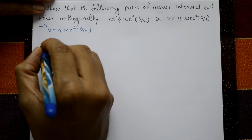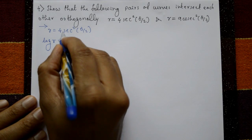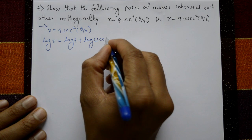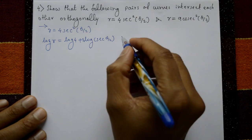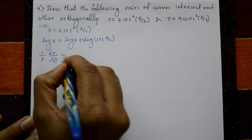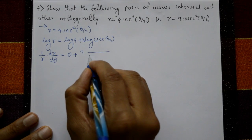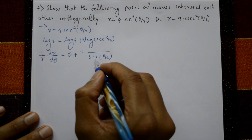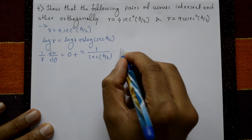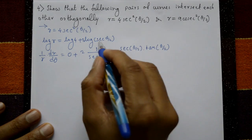Taking log on both sides: log(r) = log(4) + 2·log(sec(θ/2)), using log property. Now differentiate with respect to θ: (1/r)·(dr/dθ) = 0 + 2·(1/sec(θ/2))·sec(θ/2)·tan(θ/2)·(1/2).